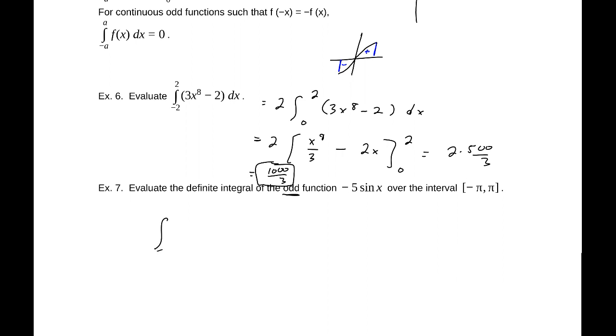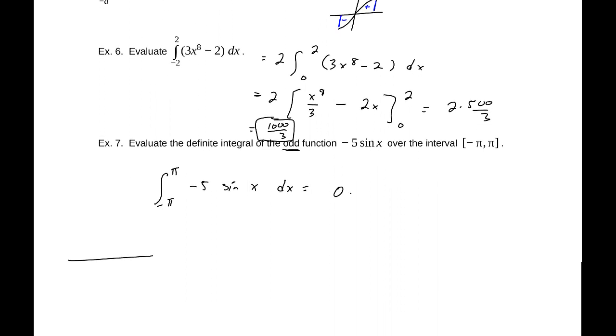So this is going to be the integral from negative pi to pi of negative 5 sine x. Because it's odd and our interval, our upper and lower limits are opposites, this is going to be 0. So our function would look something like this. From negative pi we're at 0, and at pi we're at 0. We would have a positive area, a negative area that are equal but opposite, and so the sum is 0.